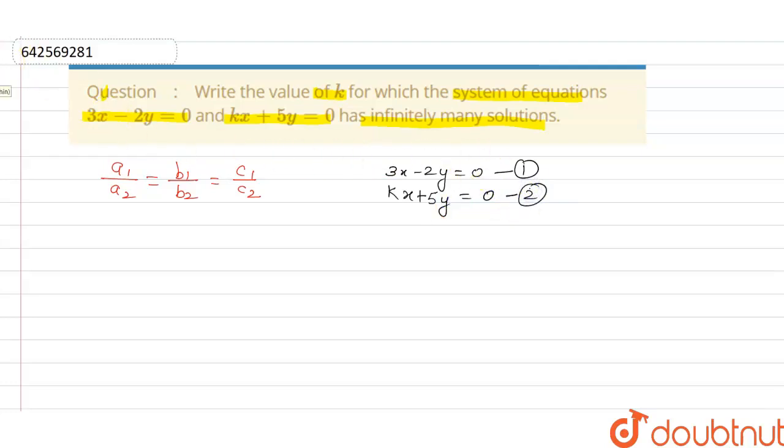So when we solve this, we get a1 is equal to 3, a2 is equal to k, b1 is equal to minus 2, and b2 is equal to 5, and c1 and c2 are both equal to 0.